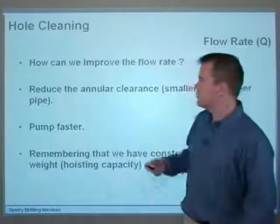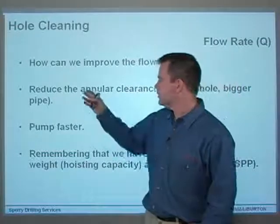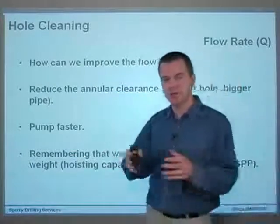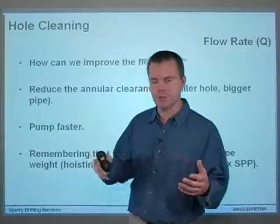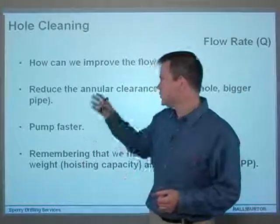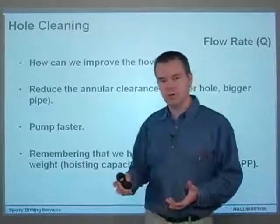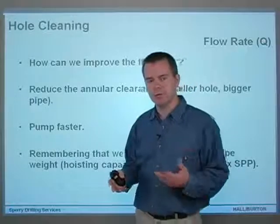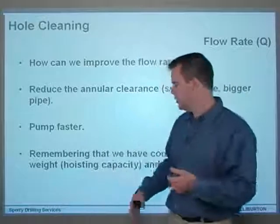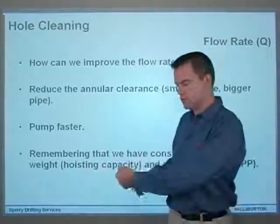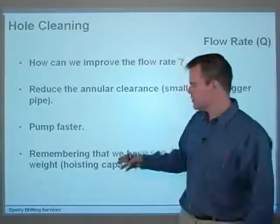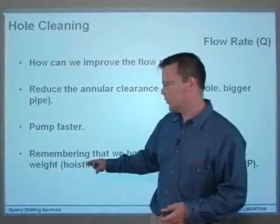How can we actually improve the flow rate? Simply put, we can either reduce the annular clearance or pump faster. Reducing the annular clearance means drilling a smaller hole or putting bigger pipe into the same size hole. We've got to remember that we have constraints on pipe weight — hoisting capacity is the upper limit of pipe weight we can suspend, and in a deep, long hole, there's only so much pull we can put on the whole system.